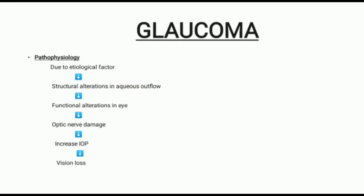Next is the pathophysiology of Glaucoma. Various etiological factors lead to structural and functional alterations in aqueous outflow, resulting in optic nerve damage, increased intraocular pressure, and vision loss. Environmental and other risk factors cause functional or structural changes in the eye, including optic nerve damage, increased intraocular pressure in the vitreous body, trabecular meshwork obstruction, excess aqueous humor accumulation, and ultimately vision loss.